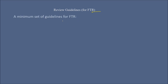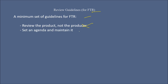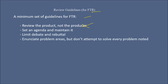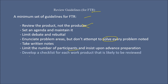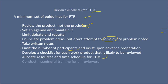A minimum set of guidelines for FTR should include: review the product, not the producer; set an agenda and maintain it; limit debate and rebuttal; enunciate problem areas but don't attempt to solve them on the spot; take written notes; limit the number of participants; ensure advance preparation; develop a checklist for each product likely to be reviewed; allocate resources and time scheduled for FTRs; conduct meaningful training for all reviewers; and review your early reviews.